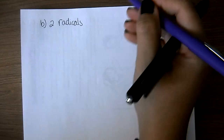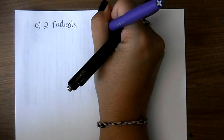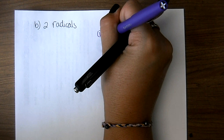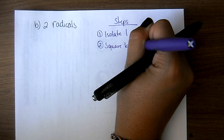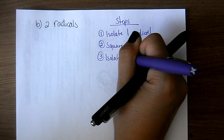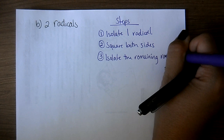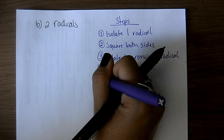The last scenario is when you have two radicals — this is a longer process. The steps are: first, isolate one radical. Second, square both sides — this eliminates one radical but leaves another. Then it's like starting over: step three, isolate the remaining radical. Step four, square both sides again. Step five, solve and check. You have to check your solutions for this as well.